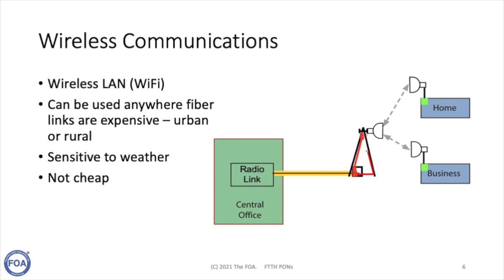The line-of-sight wireless connection with Wi-Fi could basically be called fiber-to-wireless. You have an antenna station connected on a fiber backbone, using line-of-sight Wi-Fi to connect users. This can be used anywhere fiber lengths are expensive, both in urban and rural networks where the cost of installing fiber is too high. However, wireless has a tendency to be sensitive to weather — especially a problem with 5G — and it's not cheap, especially not cheap to upgrade, and requires full-time power. But where fiber is too expensive, it's certainly a viable option.